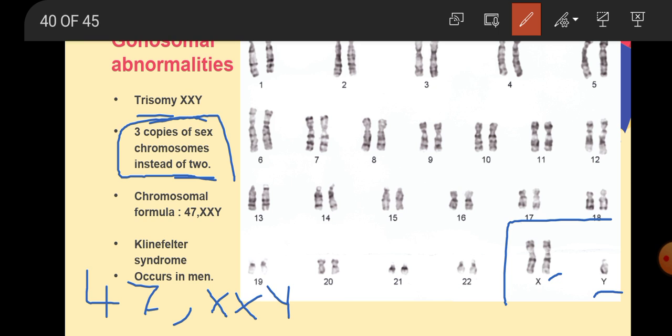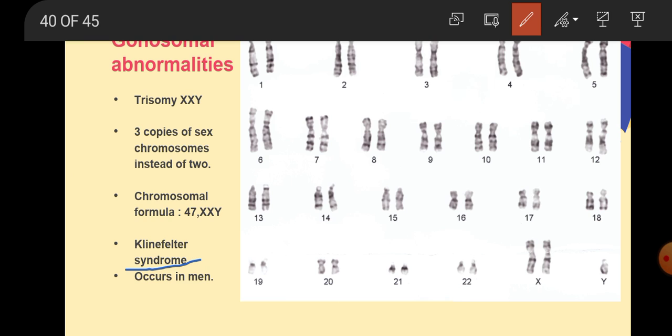As you can see, this individual is a male because it has Y gonosome type. So this abnormality, which is trisomy XXY, occurs only in men. If you remember when we talked about Turner syndrome, which is monosomy X, this syndrome occurs only in women. But for trisomy XXY, it occurs only in men. The other name of this trisomy, or the syndrome name of trisomy XXY, is Klinefelter syndrome. This individual has three copies of gonosomes instead of two.